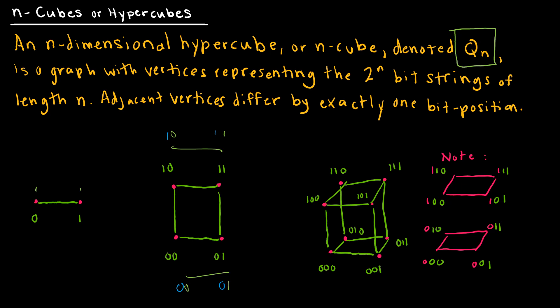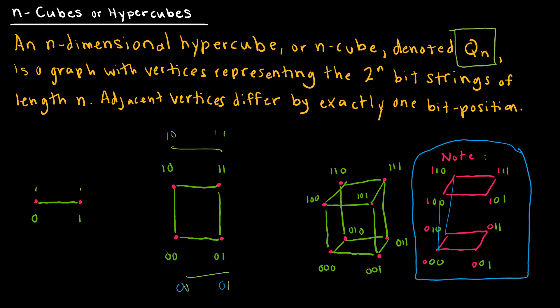Then I took that square and doubled it again, adding a zero in front of the bottom ones and a one in front of the top ones, and then connected them. That is how we construct a hypercube.